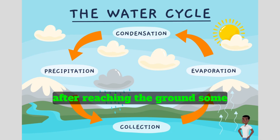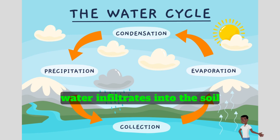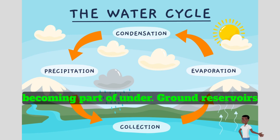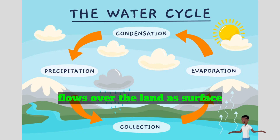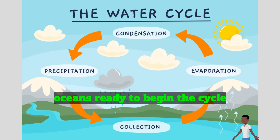After reaching the ground, some water infiltrates into the soil, becoming part of underground reservoirs called aquifers. The rest flows over the land as surface runoff, returning to rivers and oceans, ready to begin the cycle again.